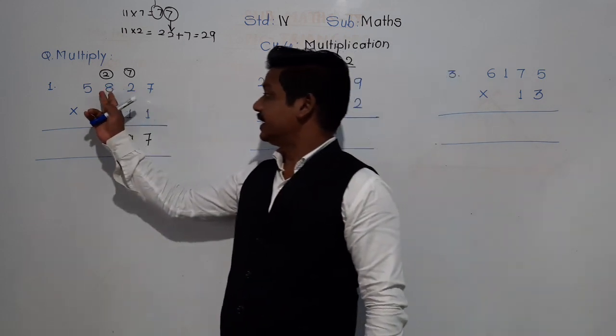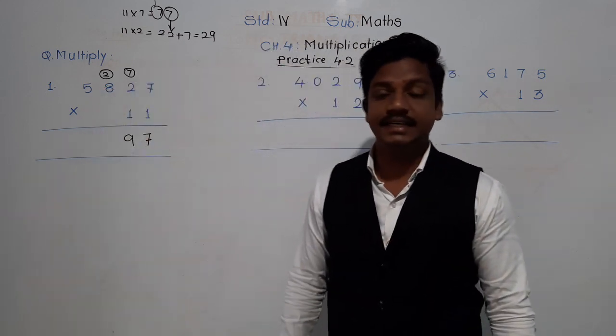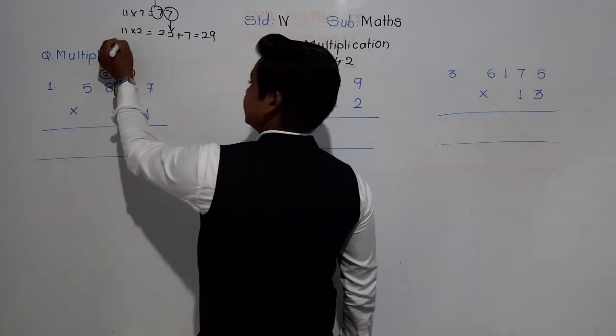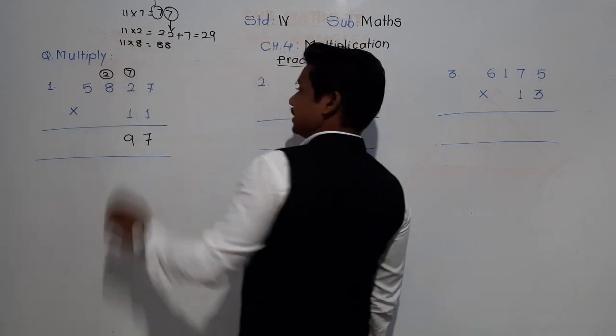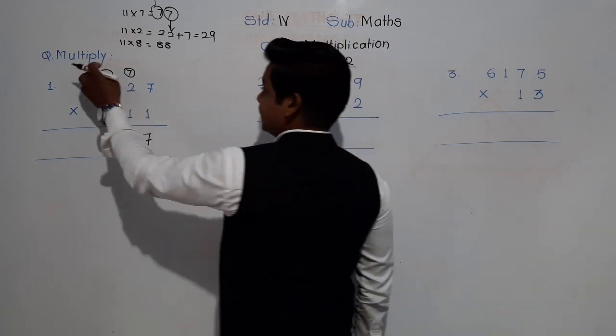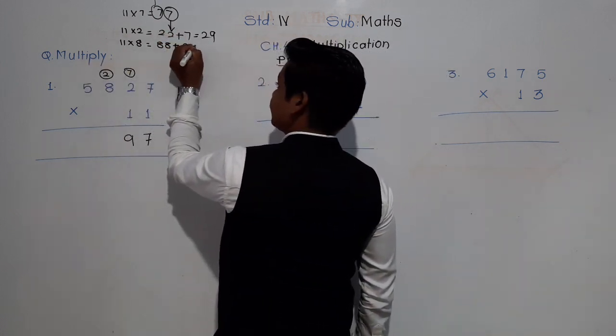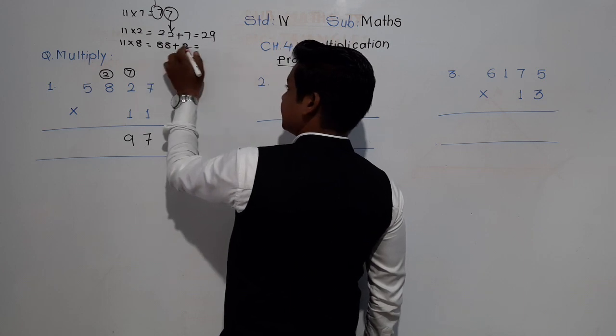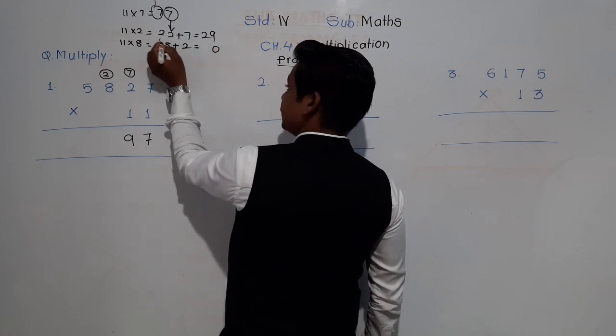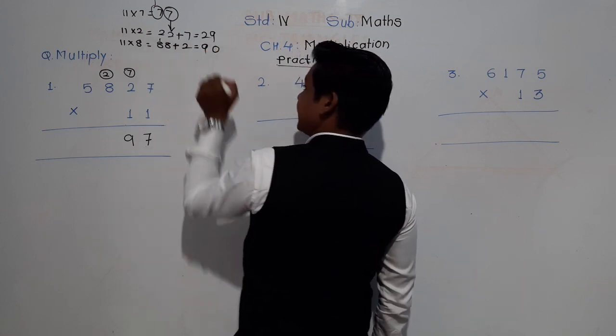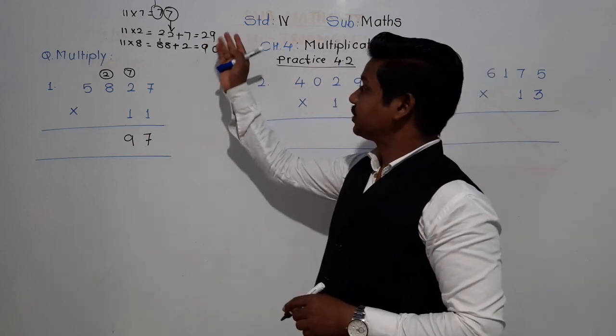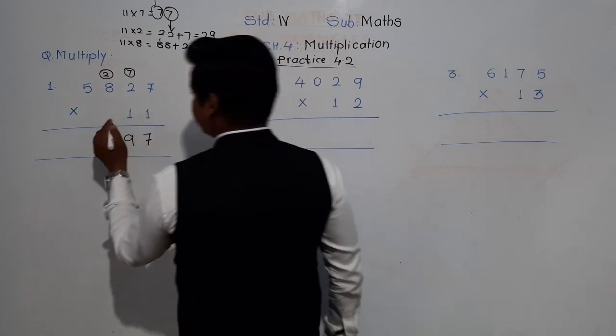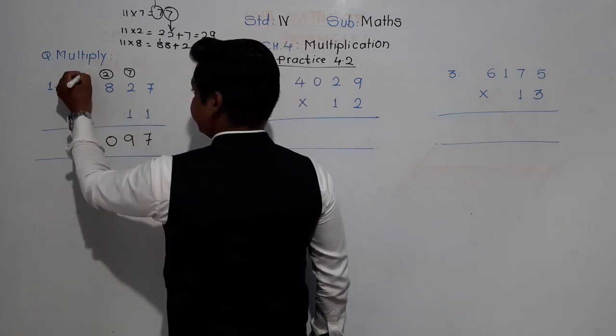Then 11 eights are 88, plus this carried 2. 88 plus 2: 8 plus 2 is 10, 1 carried, 8 and 1 is 9, so 90. 0 will come down and 9 will be carried.